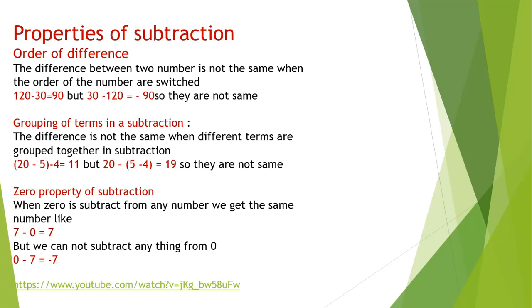Zero property of subtraction. When we add 0, like 0 plus 5 or 5 plus 0, the answer is the same number. But in subtraction, like 7 minus 0, we'll get 7. But we cannot subtract any number from 0. If we subtract any number from 0, we'll get an answer in minus. I hope you understand. Thank you. Allah Hafiz.